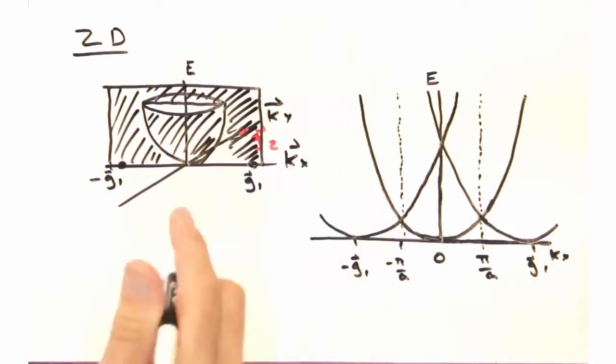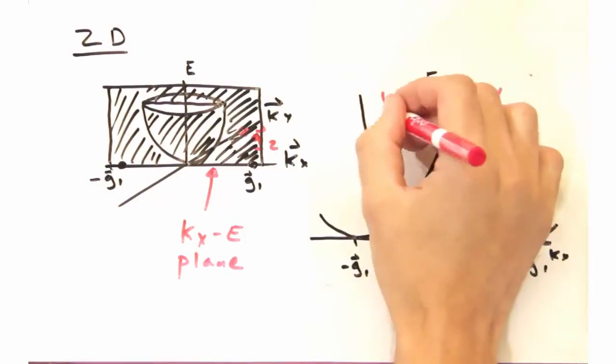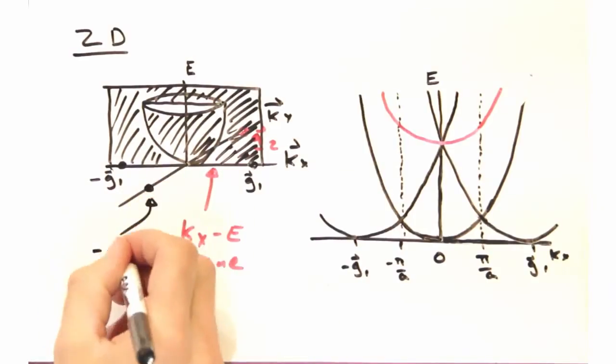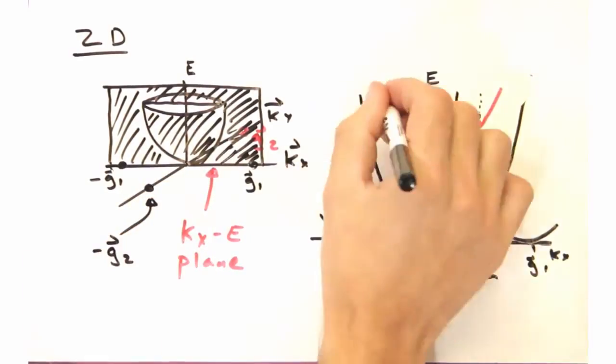Now suppose I turn on the parabola with an origin at 1G2. What happens as it expands out? Eventually it's going to cross the Kx plane, yeah? Yeah, it does, and it creates this cross-section. What about the parabola at minus 1G2? Well, it should be the same thing, yeah?